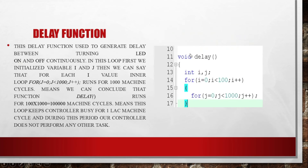Now comes the delay function. I have created a function here called delay. In the last lecture also, I explained what the delay function is doing. It only provides delays between two instructions — between LED1 and LED2, or between any two LEDs. In layman's language, this function is only providing delay.